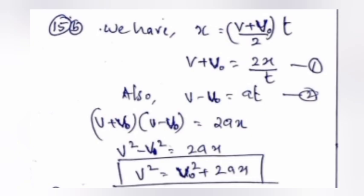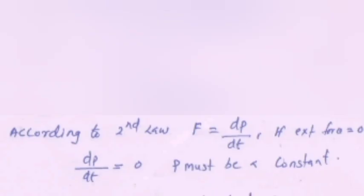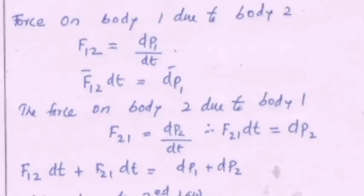Question 16a: State the law of conservation of momentum. Question 16b: Prove the law of conservation of momentum using Newton's third law of motion. Answer A: According to second law, F equals dp by dt. dp by dt equals 0. p must be a constant. Answer B: Force on body 1 due to body 2, F₁₂ equals dp₁ by dt. F₁₂ dt equals dp₁.